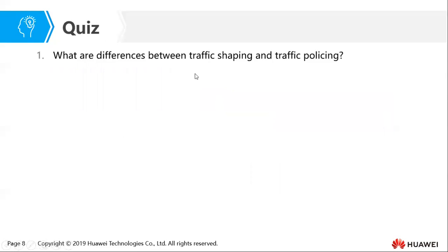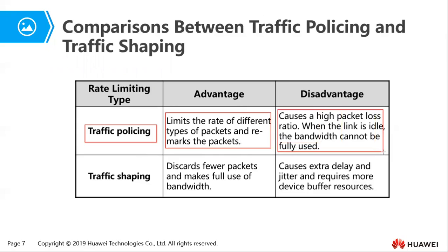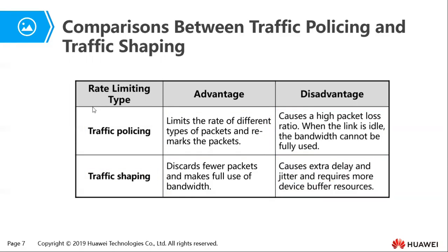This slide compares the advantages and disadvantages of both. Traffic policing limits rates of different packet types and can remark packets, but it causes high packet loss and wastes bandwidth when the link is idle. Traffic shaping discards fewer packets and makes full use of bandwidth through buffering, but it causes extra delay and jitter and requires more device buffer memory resources.